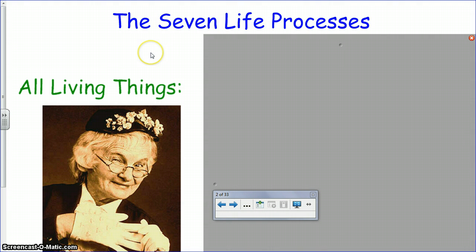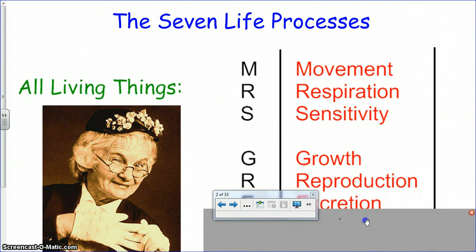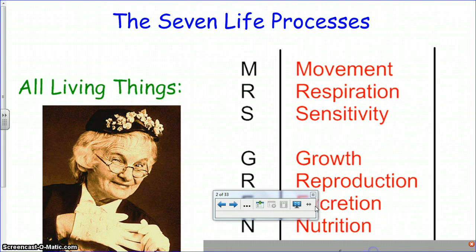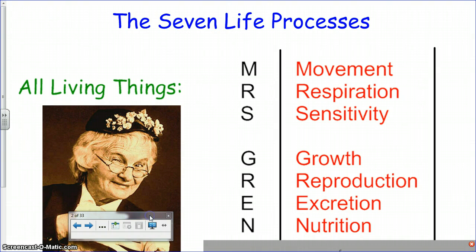There are seven life processes, and the reason why this picture of this lady is here is because her name is Mrs. Gren. We use the word Mrs. Gren to help us remember what the seven life processes are. All living things do all of these — so if you're a living thing, you must do these seven things.